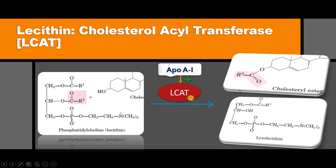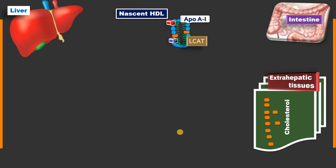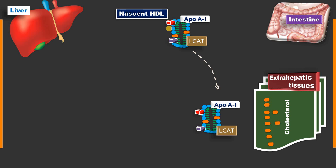ApoA1 is the activator of LCAT. Now we see the metabolism of HDL. Nascent HDL contains ApoA1, LCAT, ApoC, and ApoE. Its synthesis requires the liver as well as intestinal mucosal cells. The function of HDL is to remove cholesterol from extrahepatic or peripheral tissue and hand it over to the liver. We do not want cholesterol accumulation in the peripheral tissue, as that may lead to atherosclerosis and cardiovascular disease or cerebrovascular accident. The nascent HDL travels through the circulation toward extrahepatic tissues.